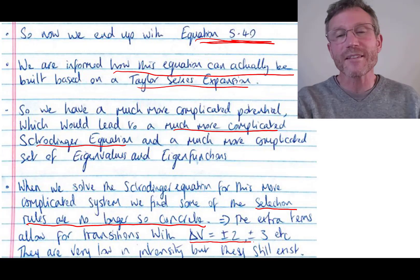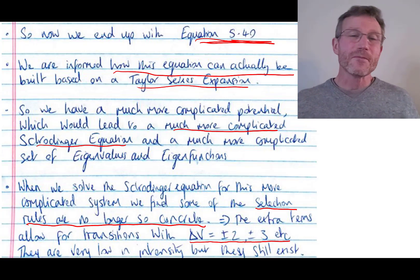And we also find that these selection rules are relaxed a little bit such that we can have a change in the vibrational quantum number delta V of plus or minus two or plus or minus three, etc. So these transitions we do actually see in real life infrared spectroscopy. They're very low in intensity, but they still exist.